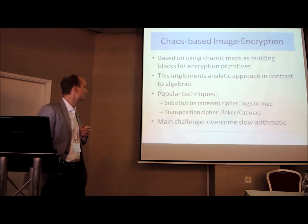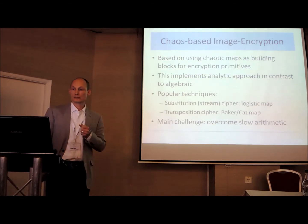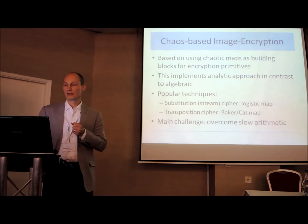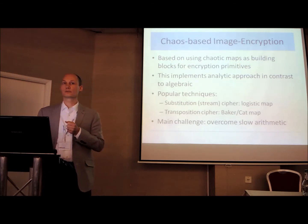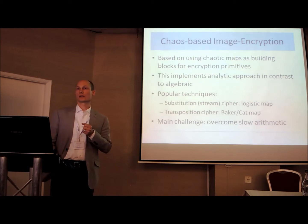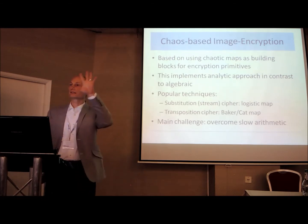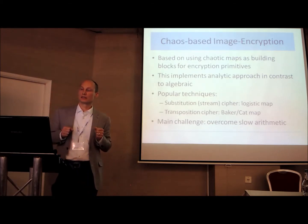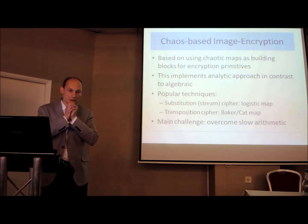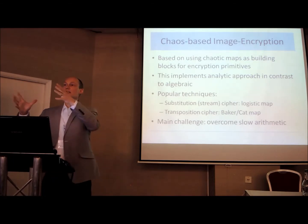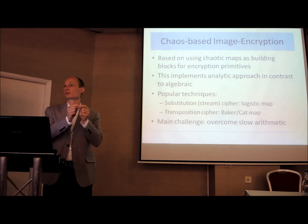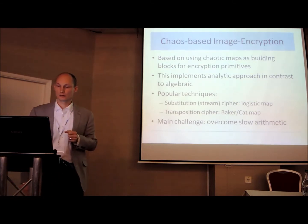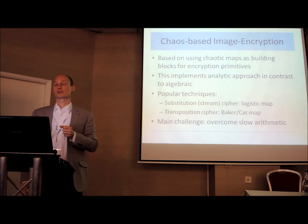So what is chaos-based image encryption? In chaos theory we look at specific chaotic maps, which have certain properties we believe are useful for security. We might have seen popular images of fractals — the complicated structures of the Mandelbrot set, for example. These kinds of maps respond quite unpredictably towards small changes in the input, and that's basically what gives us good diffusion — a good property for using them as building blocks in encryption.